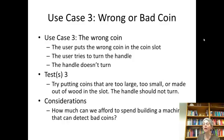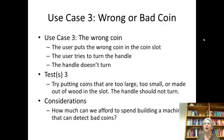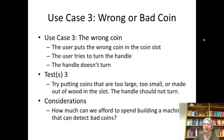What if it's a wrong or bad coin? The user puts a wrong coin in and tries to turn it. We can pretty easily make a machine where the handle won't turn all the way unless the coin is the right size. But what if it's a fake coin, like a wooden coin — there used to be a saying, don't take any wooden nickels. We want the handle to not turn, but there's a limit to how good we can be at recognizing counterfeit coins. So again, there's a trade-off: how much can we afford to spend on this machine?